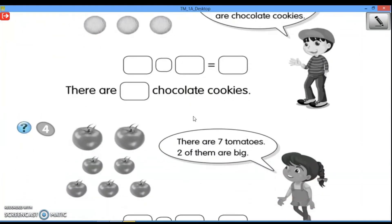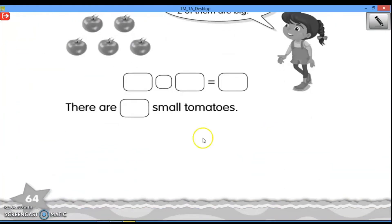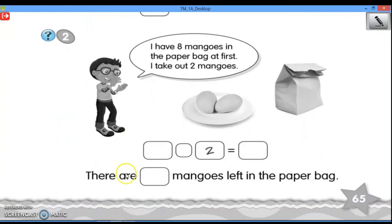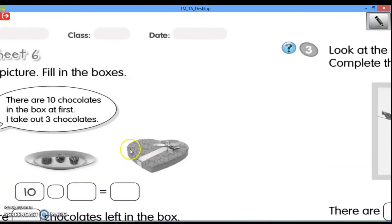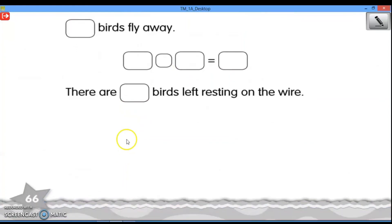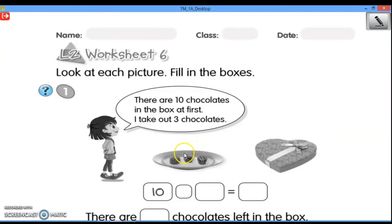Selanjutnya, teman-teman bisa mengerjakan sampai halaman 64. Untuk halaman 65 and 66, teman-teman juga bisa mengerjakan seperti yang sudah miss contohkan. Jadi, ini merupakan soal untuk subtraction stories. Nah, teman-teman ketika mengerjakan boleh dibantu oleh orang tua atau orang dewasa yang ada di rumah teman-teman ya. Teman-teman jangan lupa untuk mengerjakan dengan teliti dan tidak perlu terburu-buru.